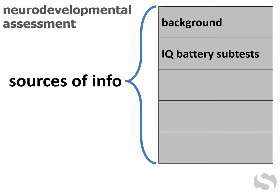IQ, or intelligence tests, are batteries of various subtests, each of which assesses particular mental abilities like conceptualization and active working memory. An intelligence test yields an IQ score, which is an index of overall mental ability, but subtest scores are more important for neurodevelopmental assessments since the goal is to reveal profiles of abilities.